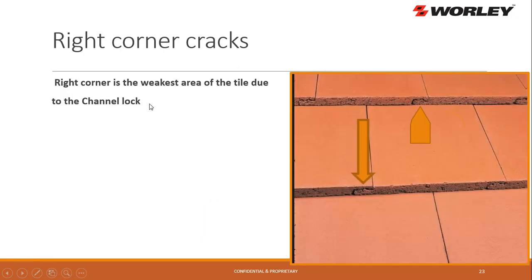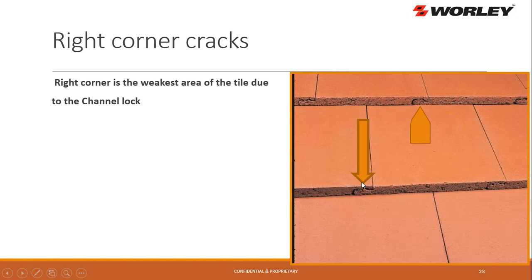Here's why the corner crack happens: the bottom right corner breaks because of the interlock — it's the weakest point of the tile, very thin right there. The bottom left of the tile has the channel lock with a little knob that makes the channel, and this puts pressure on the top tile causing it to break. Again, it's from being installed too tight or heavy expansion and contraction. This is not storm damage.